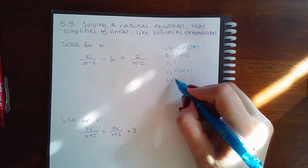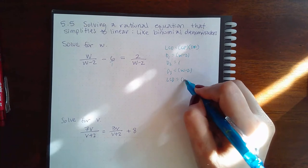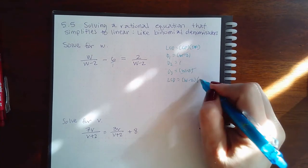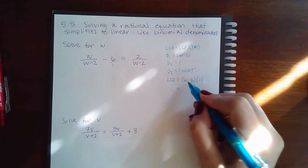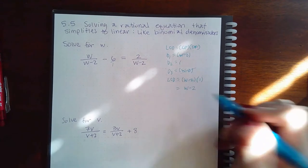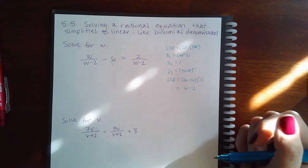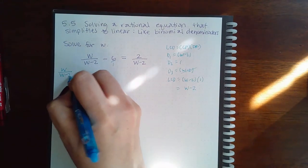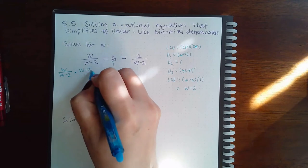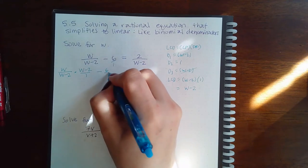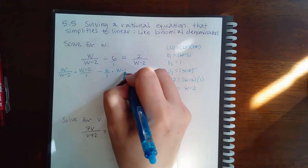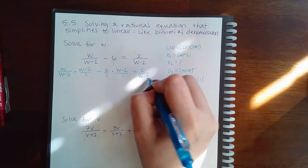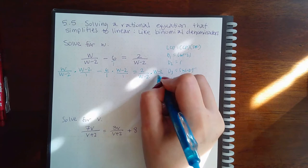And so then the LCD is the w minus 2 they have in common, so that's spoken for, and then the 1 that's just sitting there. So if I multiply that I end up with w minus 2 as the LCD. So I'm going to take the first fraction and multiply it by w minus 2 over 1, the second fraction times w minus 2 over 1, and the third fraction times w minus 2 over 1.